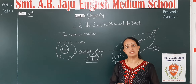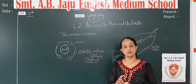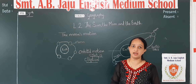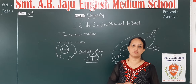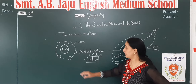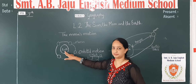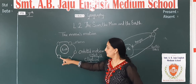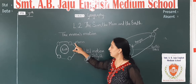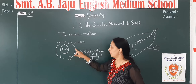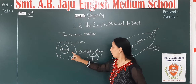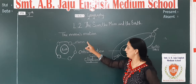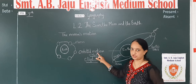Even the earth is rotating, so the moon will also have rotation and revolution. This is the earth, and the moon undergoes what is called revolution, as well as orbital motion.